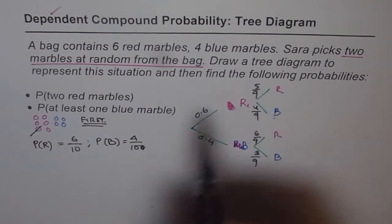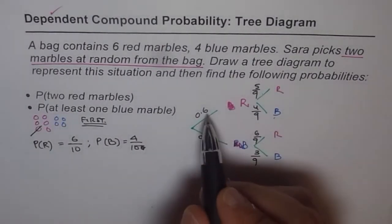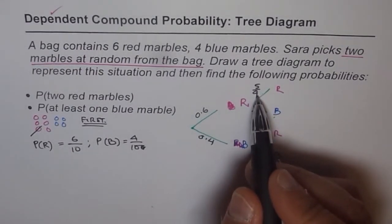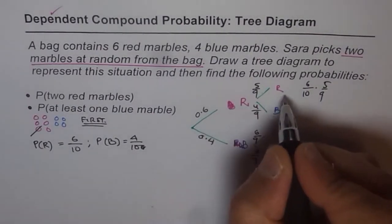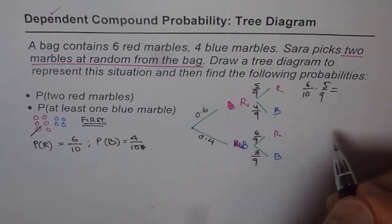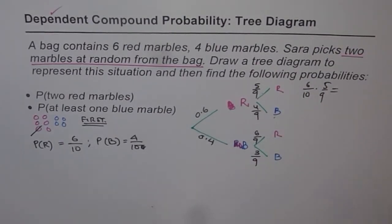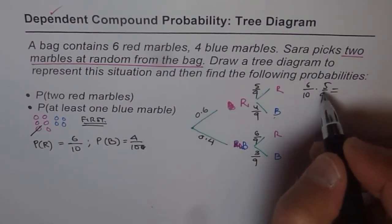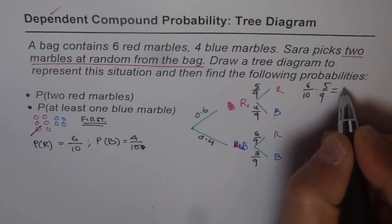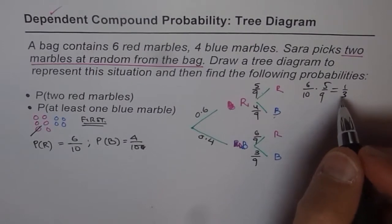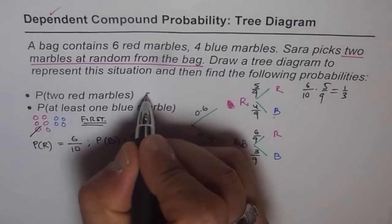Now answer the question: what is the probability of getting 2 reds? The probability of getting 2 reds is 6 over 10 times 5 over 9. Multiplying gives 30 over 90, which simplifies to 1 third, or approximately 33 percent. So the probability of picking 2 reds is 1 over 3.